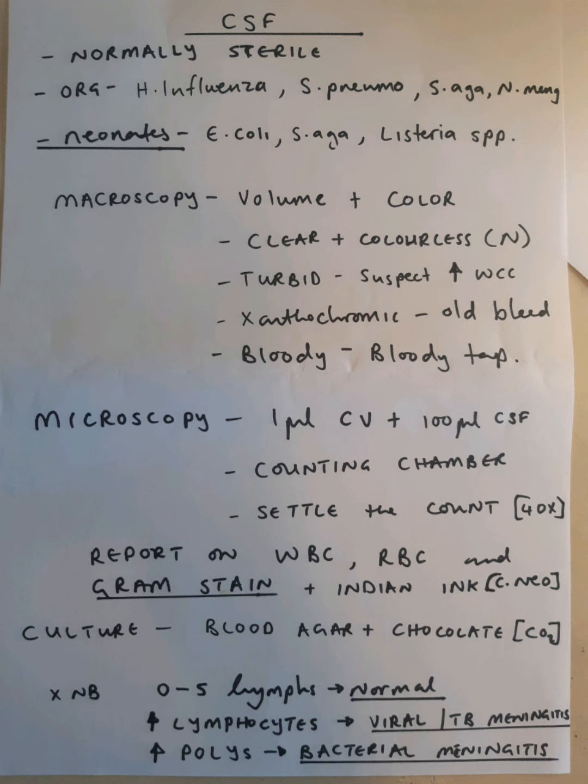For microscopy, we mainly focus on the cell count, where we take 1 microliter of crystal violet with 100 microliters of CSF, mix them, place in a counting chamber, let it settle, and view under a microscope at 40x magnification. We then report on the white cell count and the red blood cell count, and we do a gram stain for microorganisms. If yeast is suspected, we can do an Indian ink stain to look for Cryptococcus neoformans.